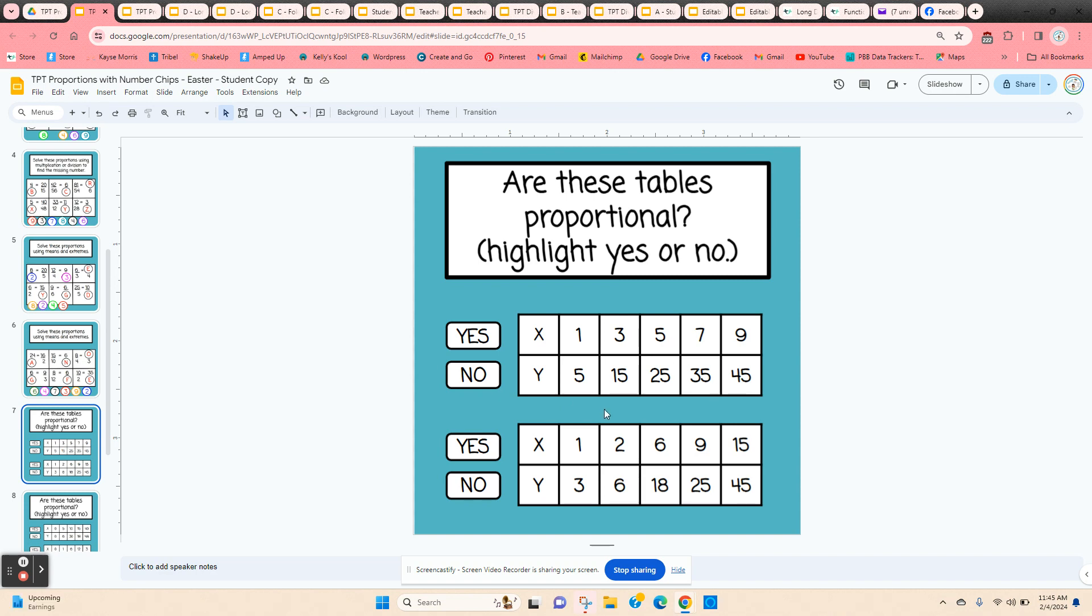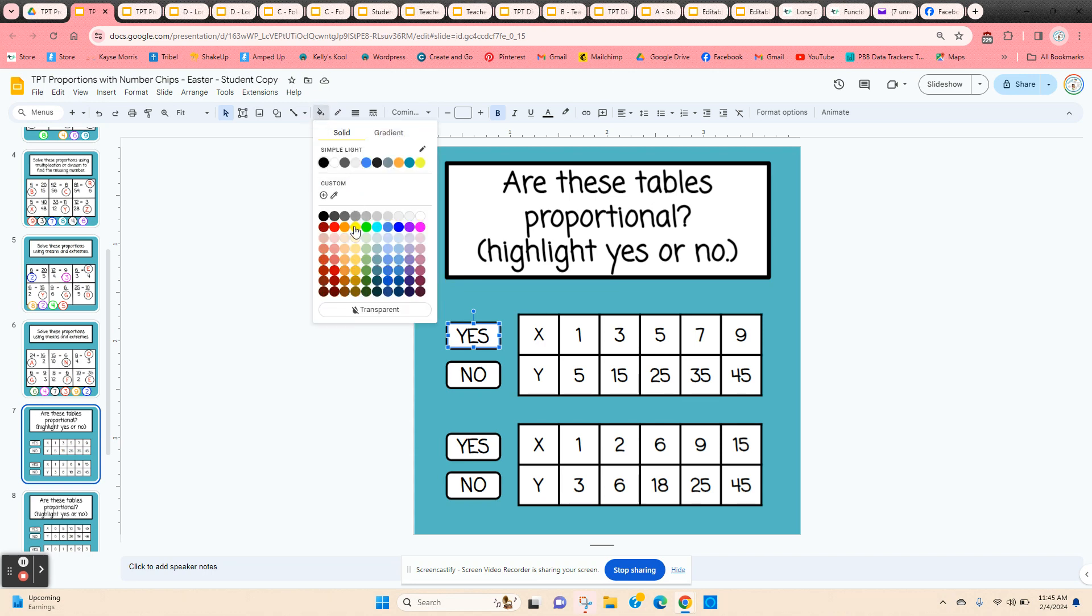Here we can see that we multiply the x times five to get the y, and we have to check every single one of them. It is in proportion, so they're going to click on the yes, come up here to the fill color, and they're just going to choose any color they like.